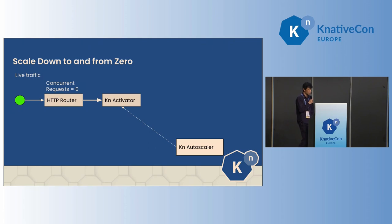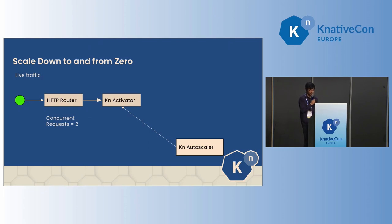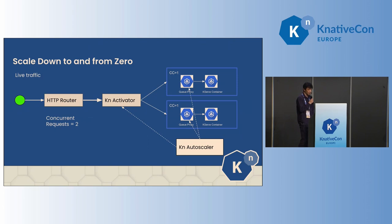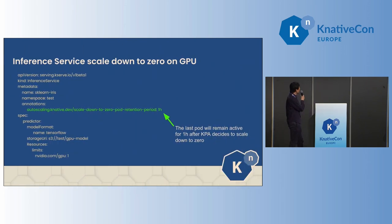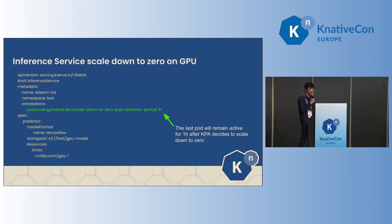Let's look at how scale down to and from zero works. While the service is idle, the Knative controller rewrites the HTTP router to the Knative activator. Once requests are received, the autoscaler scales up to the desired number of pods based on the request amount and autoscaling metrics. The Knative activator stores requests until the pods are ready to serve live traffic. Knative also scales down to zero after the default 30 seconds. If you're doing testing or benchmark testing and want to avoid the cost of spinning pods up and down, you can add annotations to keep the pod running longer to avoid the cold start penalty.